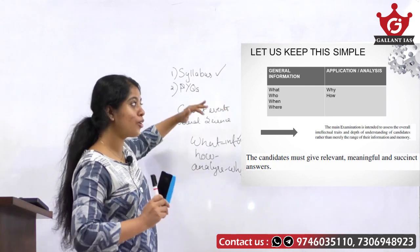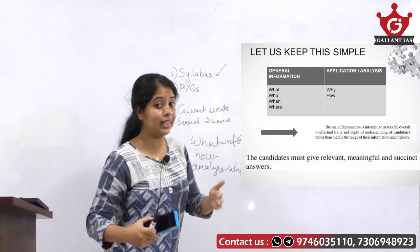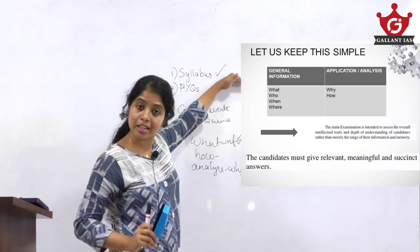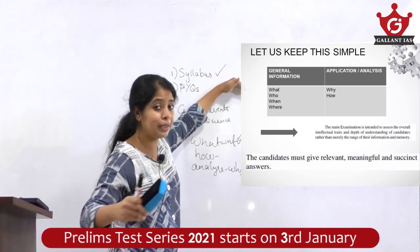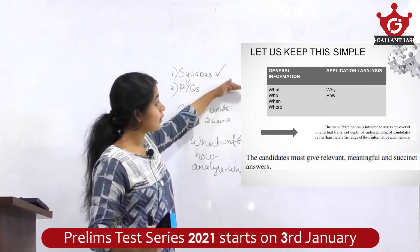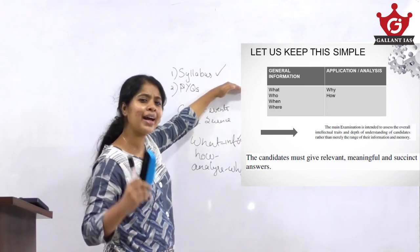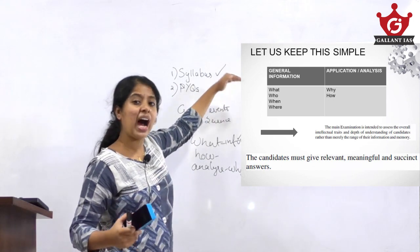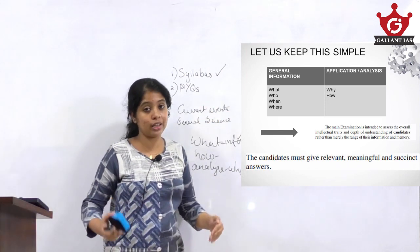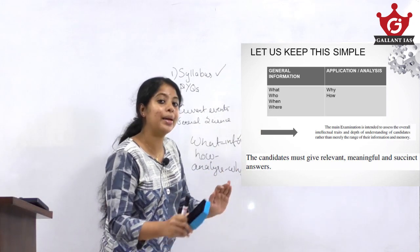Under the application or analysis part, you are generally supposed to answer why or how. For example, if they ask about India's manned space mission: under general information, write what the mission is, who is doing it — ISRO and related departments — and when or where it is being conducted. Under application and analysis, write why India is conducting such a mission, or how it will benefit socio-economic development or India's position in the global scenario.